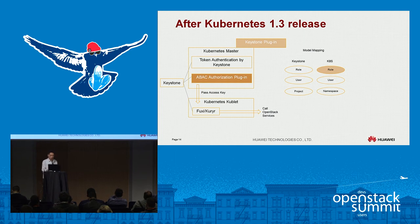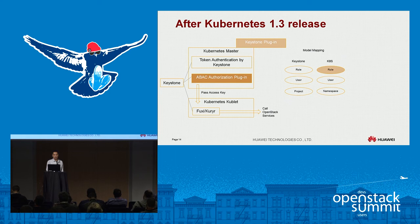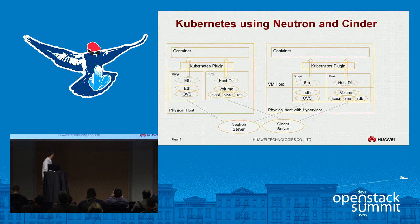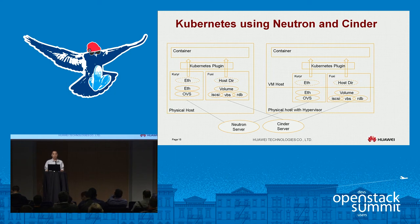With Kuryr, we make it work with Neutron so Kubernetes can use already-authorized privileges to work with the Neutron server. There are two different deployments. On the left side is a physical host — your containers run directly on the physical host. On the right side, you have a VM running on the physical host with a hypervisor. On the left, Neutron talks to OVS and then to the Ethernet interface of the physical host. On the right, we have nested OVS — Neutron talks to OVS on the physical host, then to the VM's OVS, then to the container. That's two layers.